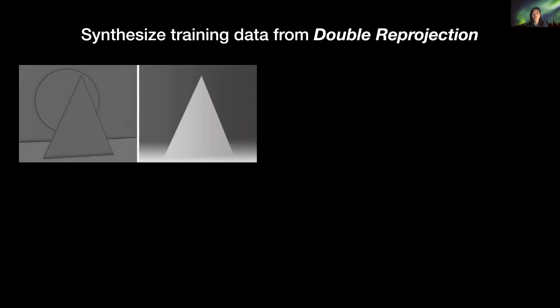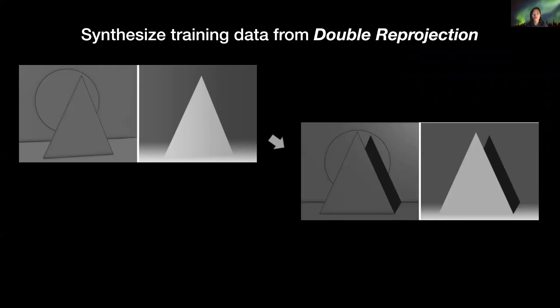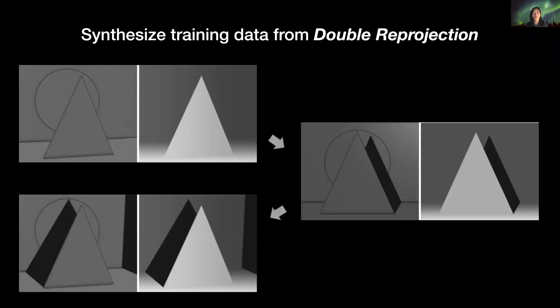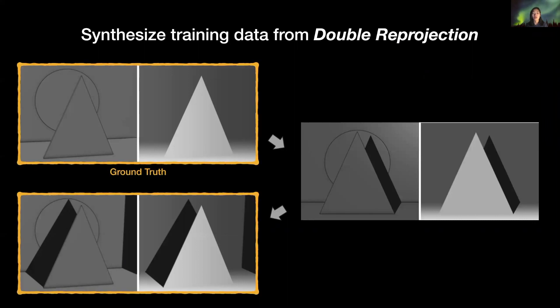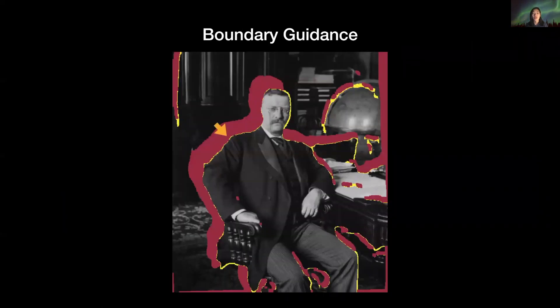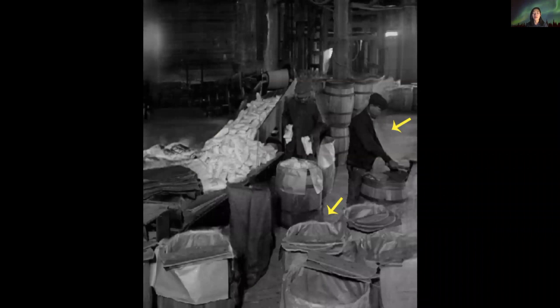To generate training data, we simulate disocclusion holes by double reprojection, where we reproject a given grayscale image and depth pair into another viewpoint and reproject them back. In this way, we can generate sample pairs using the original as the ground truth. We also introduce boundary guidance to encourage sharp depth boundaries and inpainting from the background side. With that, we are able to inpaint depth and intensity by fusing information from the background.